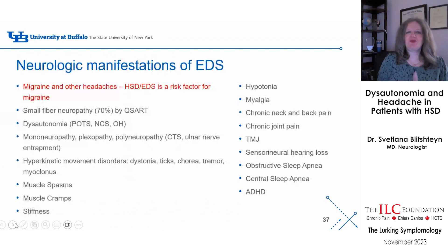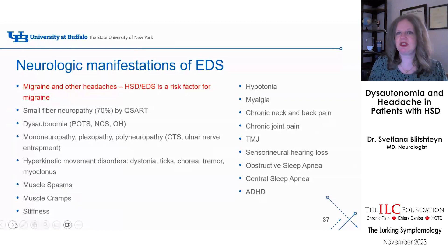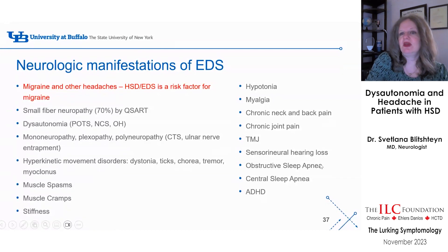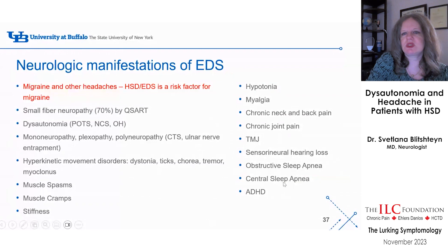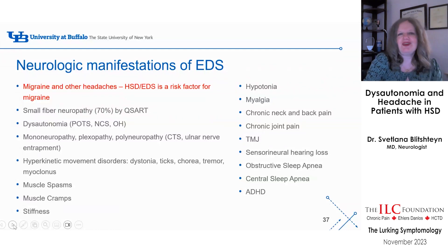All neurologic manifestations of EDS include: migraine and other headaches, small fiber neuropathy, dysautonomia, other types of neuropathy, various movement disorders, muscle spasms, cramps, stiffness, hypotonia, myalgia, and TMJ — which is very common. Sensorineural hearing loss can also occur in patients with EDS, though it's not talked about enough. Sleep apnea — both obstructive and central — as well as ADHD and other neuropsychiatric manifestations are common.